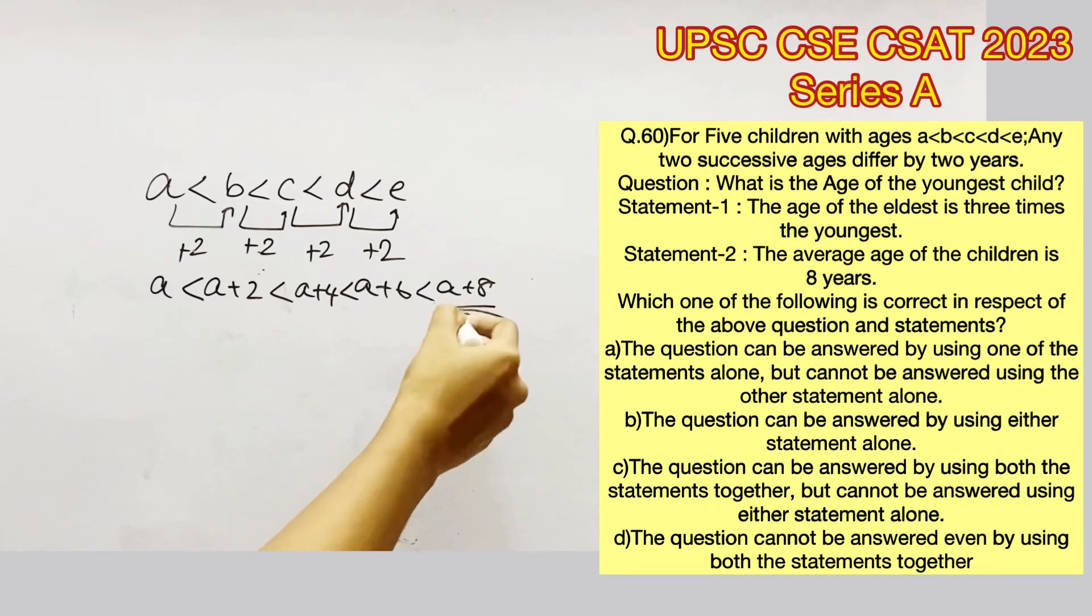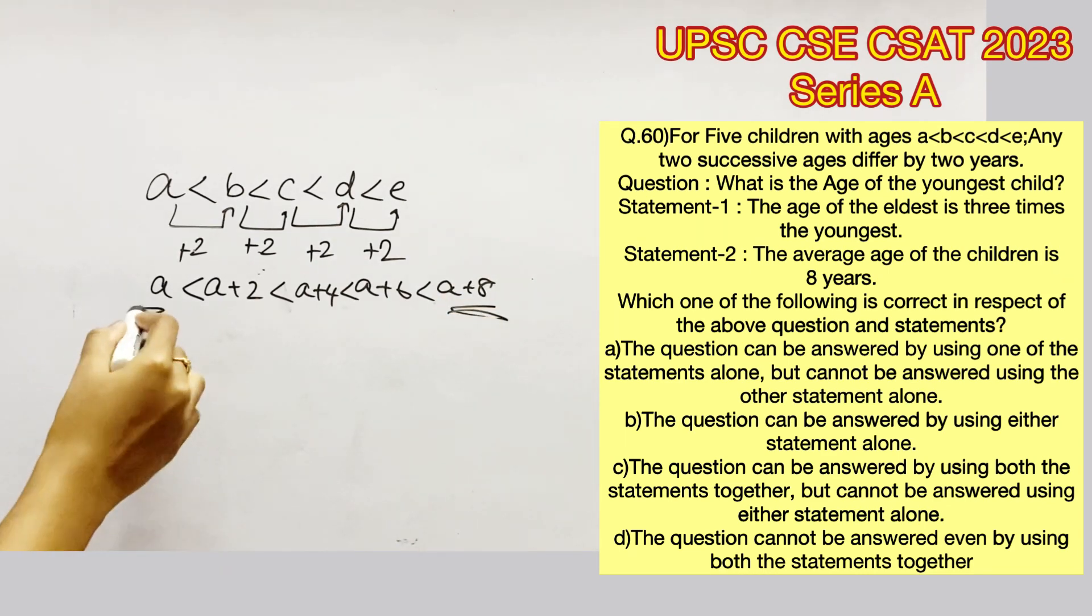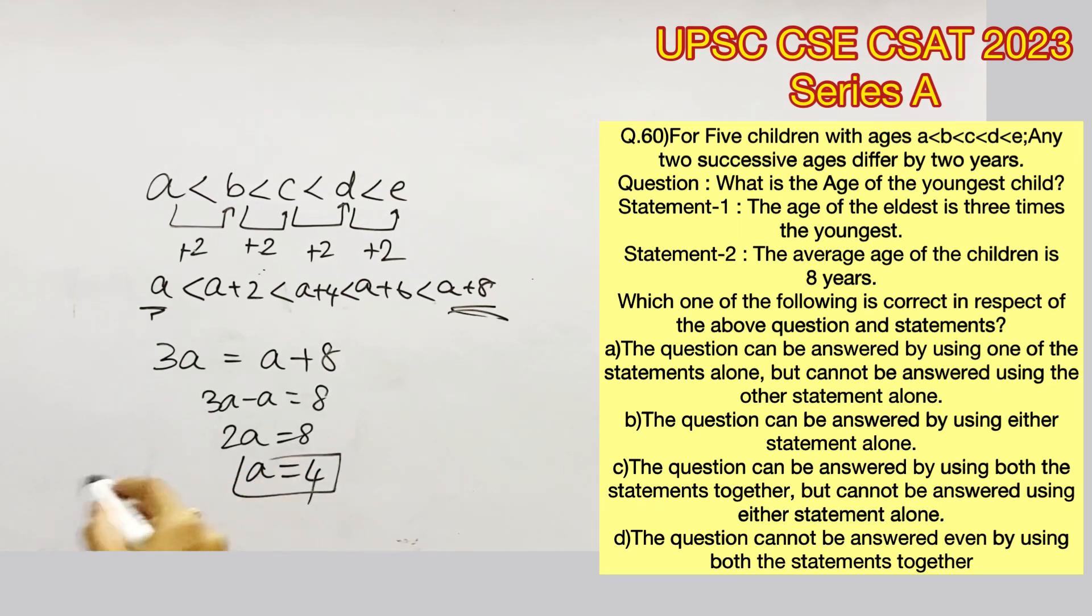The first statement says that the age of the eldest is 3 times the youngest, which means A plus 8 is 3 times A. Solving this, we get A is equal to 4. So statement 1 alone is enough to answer this question.